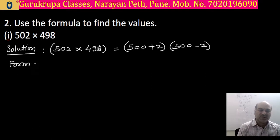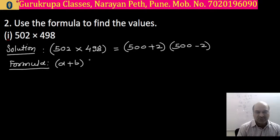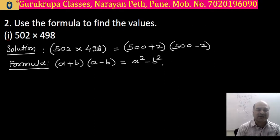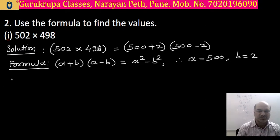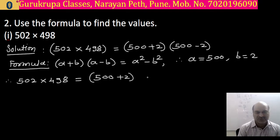By the expansion formula — and we should purposefully write down this formula each time to learn it properly — a plus b in bracket, second bracket a minus b, is equal to a square minus b square. Therefore here the value of a is 500 and the value of b is 2. So 502 into 498 is converted to 500 plus 2 multiplied by 500 minus 2.